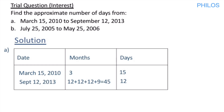Now we find the difference — the ending values minus the starting values. For months: 45 minus 3 gives 42 months. For days: 12 minus 15 gives negative 3 days. That's how you do it.